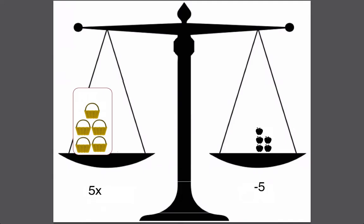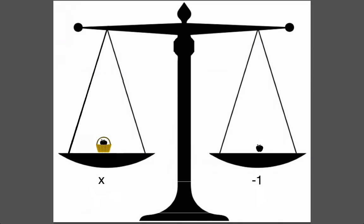We get one basket equals one negative apple. All right, I think I got it now. Are we done? That was really good. Not quite.